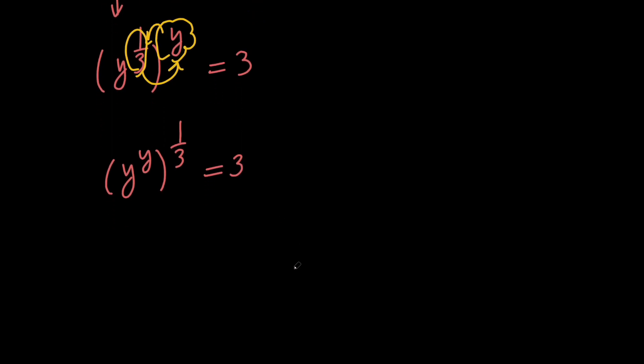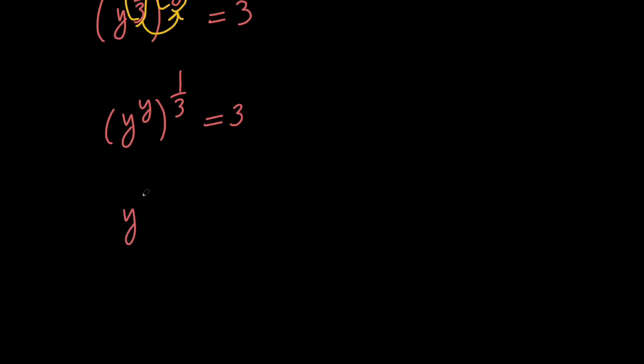Next, in order to get rid of the 1 third, let's raise both sides to the power of 3. So we're going to have y to the power of y equals 3 to the power of 3, which means that we can say that y equals 3 is a solution to our equation.